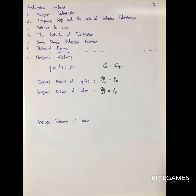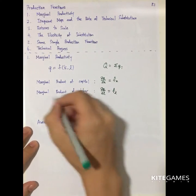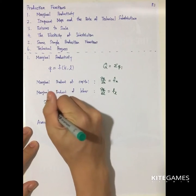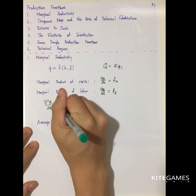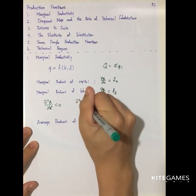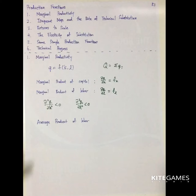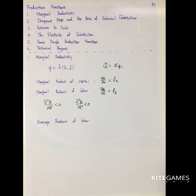One characteristic is that we assume that the second derivative of Q with respect to K squared is negative, and the second derivative of Q with respect to L squared is also negative. So we assume diminishing marginal productivity — it means that if we just increase the number of a certain kind of input, the increase in output will become smaller and smaller.